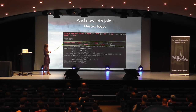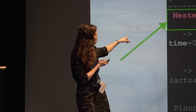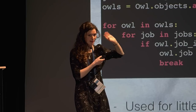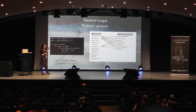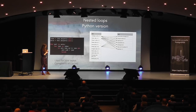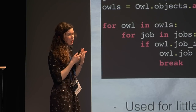First, joining the owls table with the jobs table to get each owl's job — the plan uses a nested loop. For Python developers, it's like a loop inside a loop: for each owl, loop over jobs and match the right one. The complexity is O(n × m), where n is the size of your owl table and m is your job table. It's used for really small tables and can be expensive, but it's not always a problem.